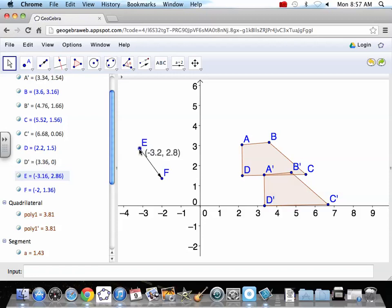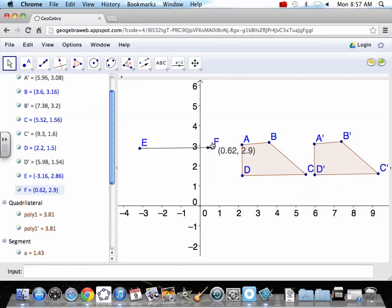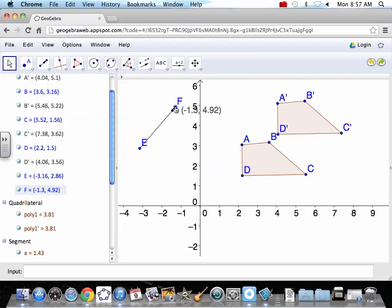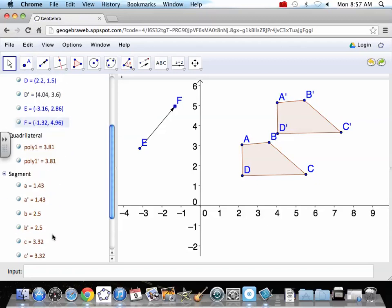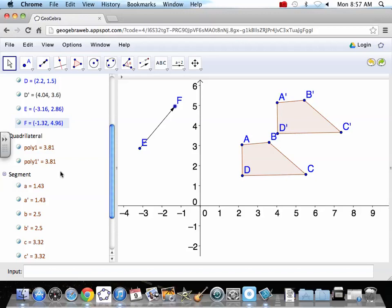It moved it. Now, you want to move it farther? Just make your vector bigger. You want to move it in a different direction? Turn your vector. You want to double-check some things - the polygon, the second one is the same size. The segments are the same. That would be an isometry.